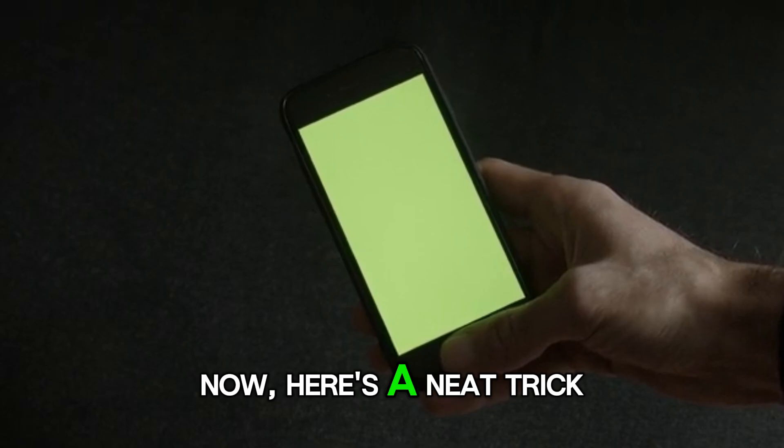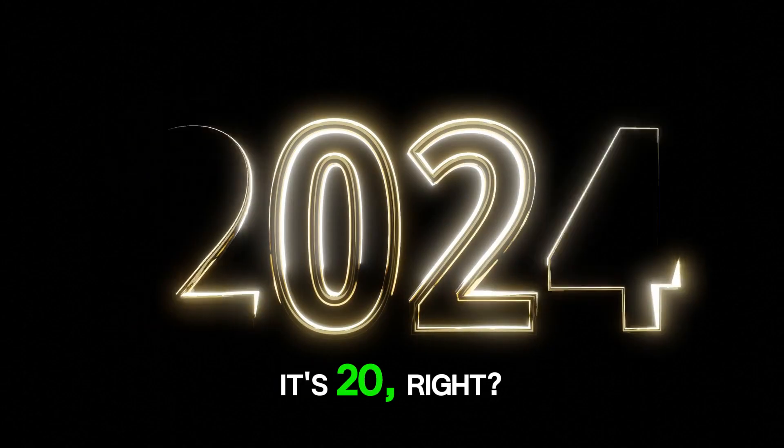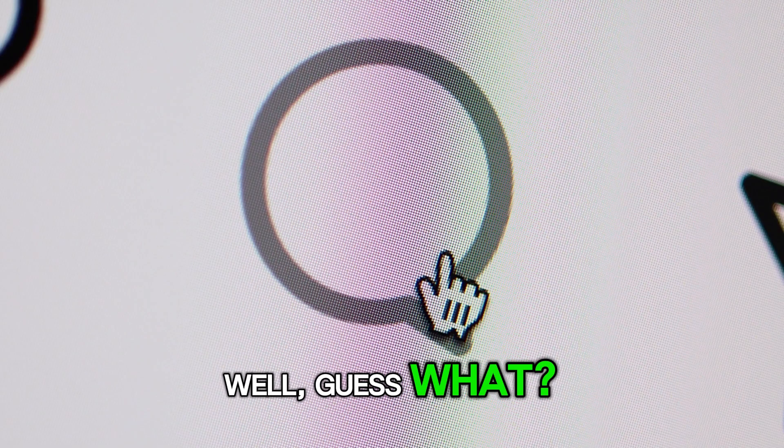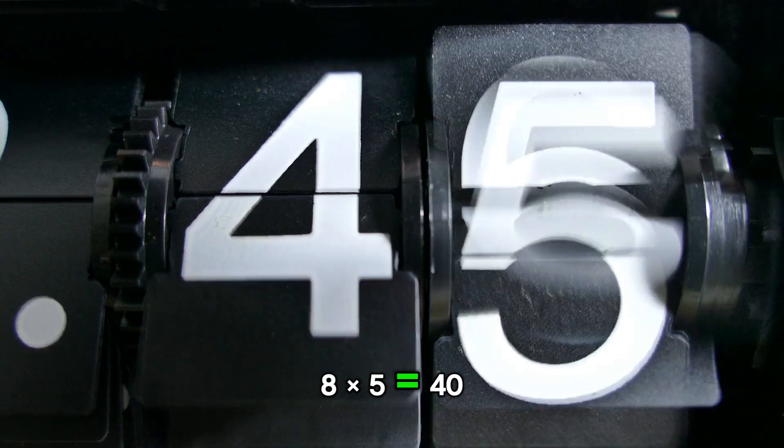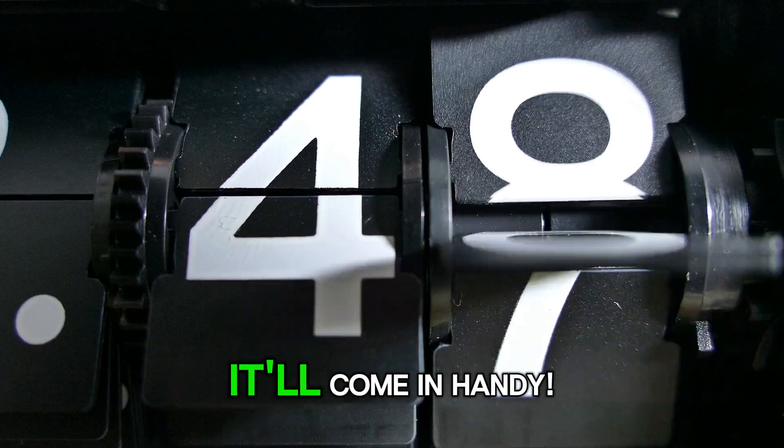Now, here's a neat trick. Think about half of forty. It's twenty, right? Well, guess what? Five eights make forty. So, eight times five equals forty. Remember this one. It'll come in handy.